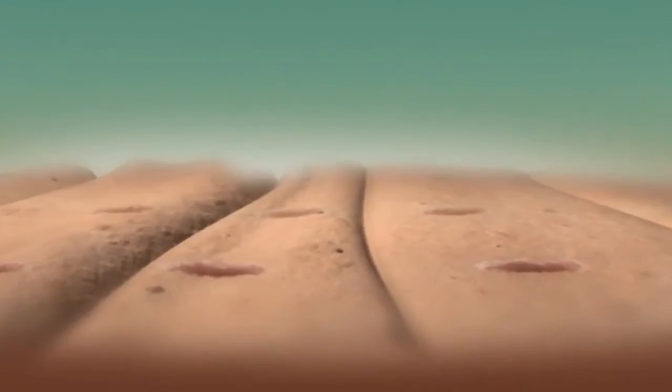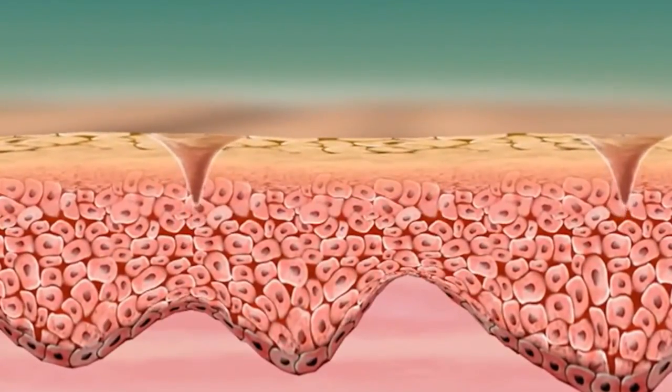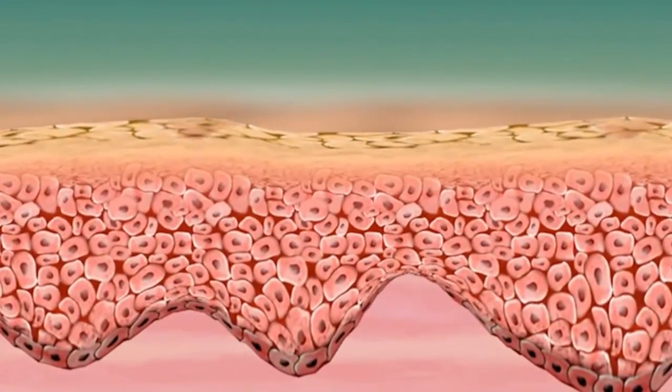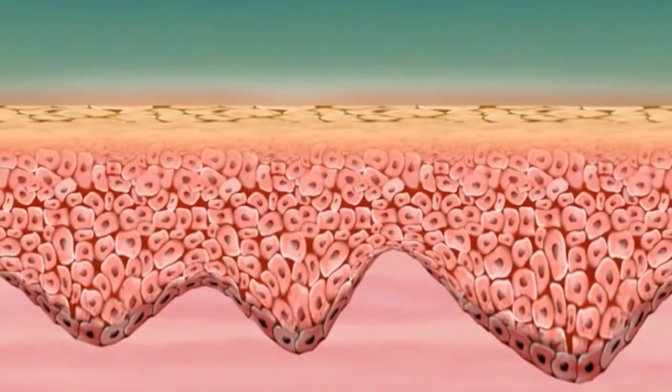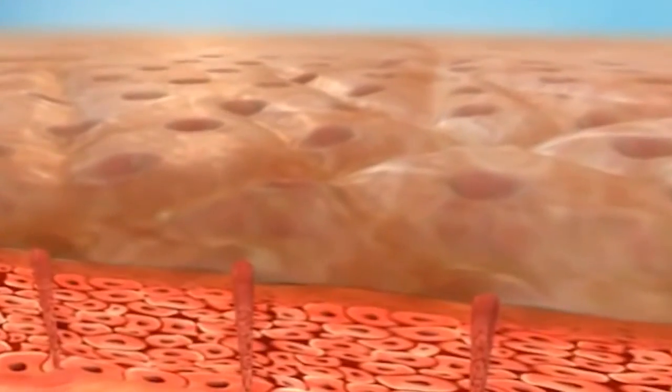The keratinocytes, these are the cells that form the protective outer layer of your skin. That's your first protection, the first defense against infection.